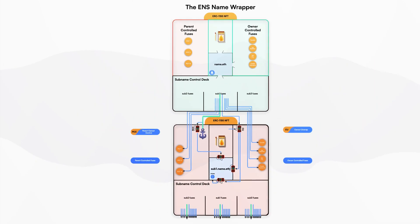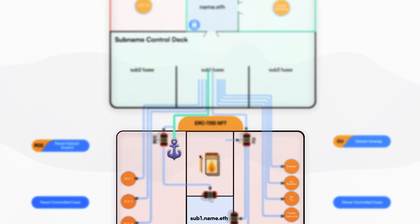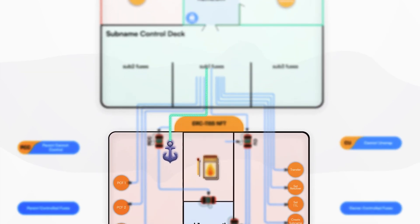The fuses connect from the parent name to the child name. As you can see, this subname is still anchored to its parent, and the parent owner has access to all fuses for the subname. The subname is wrapped, but it is not yet emancipated.